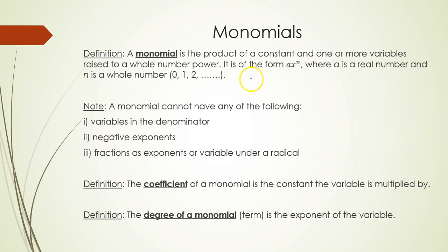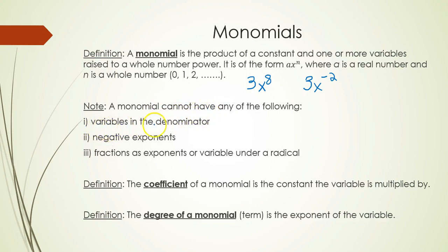For instance, any number — let's say 3 — times a variable, let's use x, raised to a whole number power: 0, 1, 2, 3, 4, 5. So 3x to the eighth is an example of a monomial. 3x to the negative second is not a monomial. To identify a monomial, keep in mind it cannot have variables in the denominator, cannot have a negative exponent on the variable, and cannot have fractions as exponents.